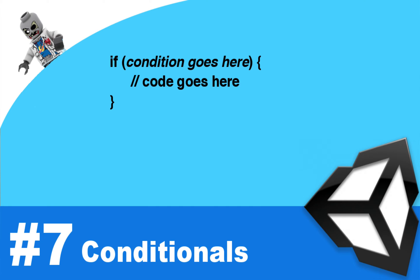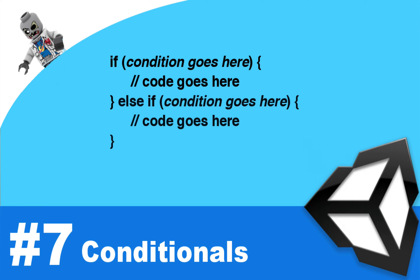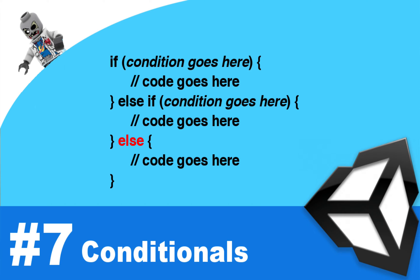You actually have some options here. If you want additional conditions, you can put after the closing brace an `else if` statement — with another pair of parentheses, another condition, and another code block. And finally, you even have another option: you can add an `else` statement with its own code block. The code first checks the first condition; if it's not true, it goes to the `else if` condition; if that's not true, it defaults to the `else`. Only the first `if` is required — `else if` and `else` are purely optional.